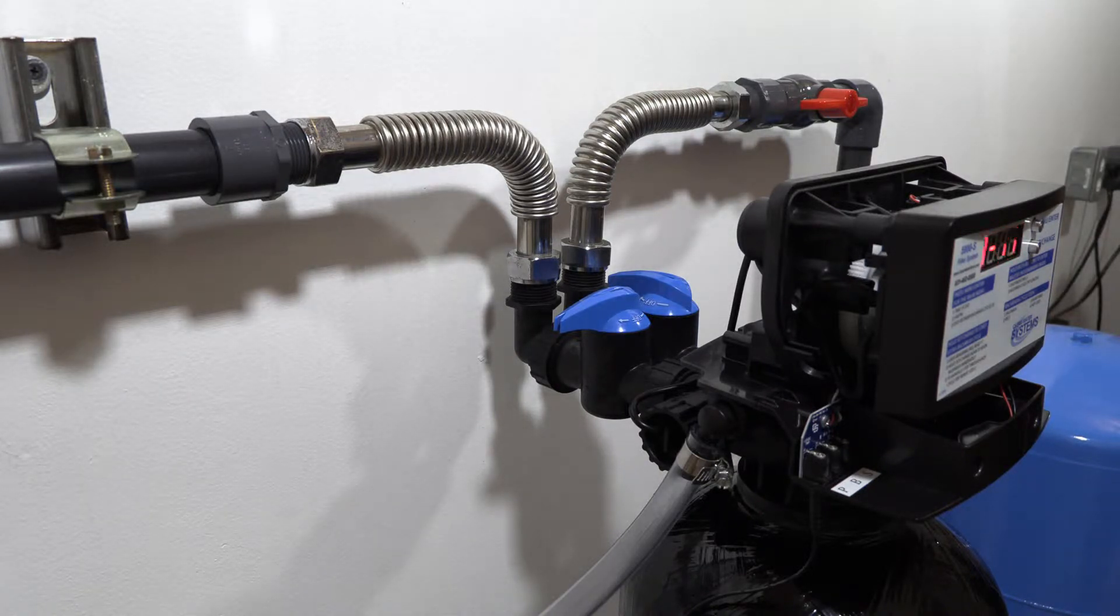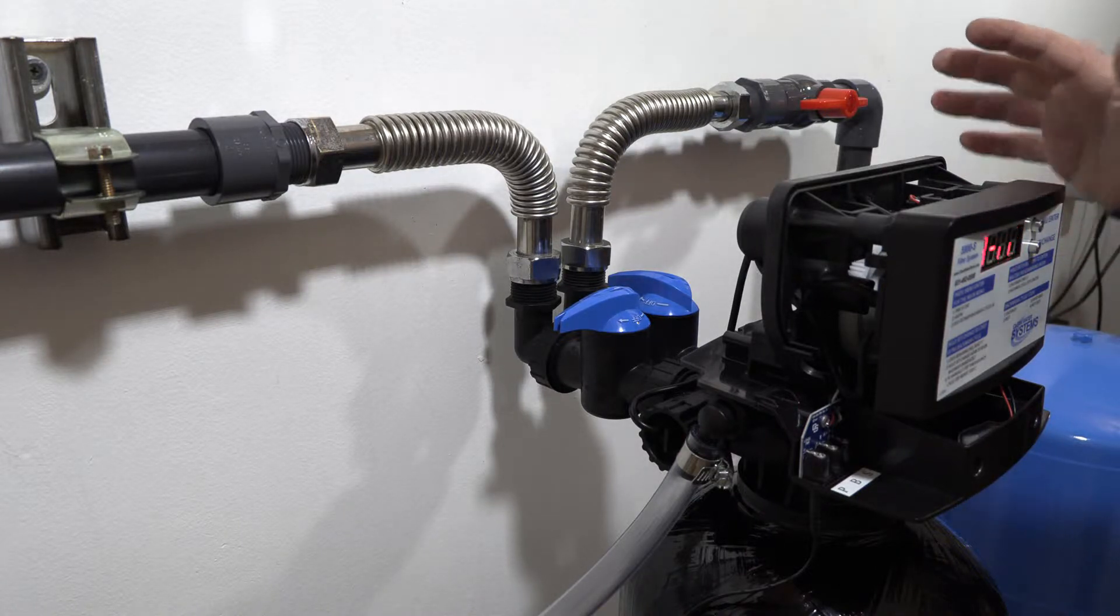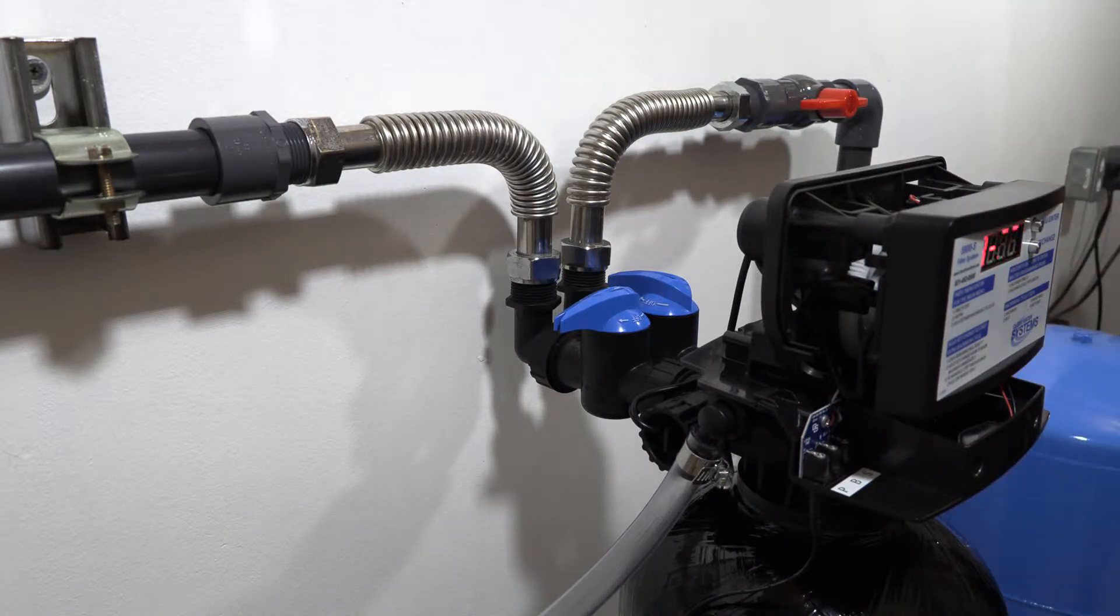So in the rapid rinse, again what you're doing is bringing the water down into the media, up through the D tube and out through here. This will start to clear up a little bit. This is going to be for six minutes. We're going to let that run for six minutes.